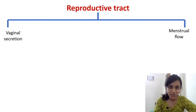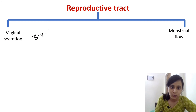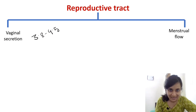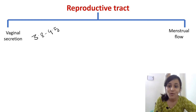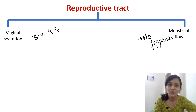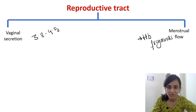Vaginal secretions have a very low pH of 3.8 to 4.5, and this moderately acidic environment destroys pathogens from settling. The menstrual flow is exceptionally rich in hemoglobin fragments, which have bactericidal properties.